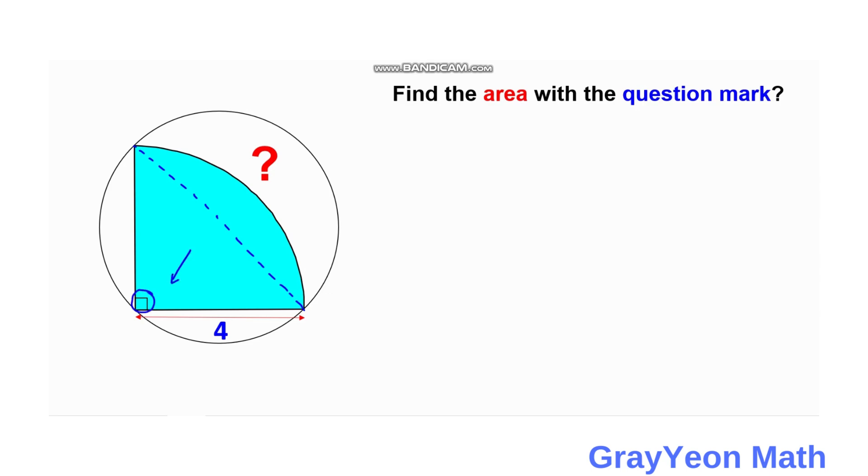By Thales theorem, if an angle inside a circle is opposite a chord, then that chord is the diameter if the angle is 90 degrees.